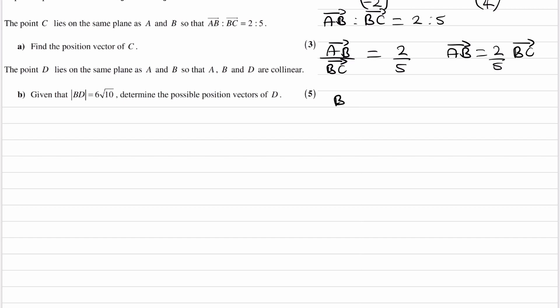And we can also say that BC, rearranging the same equation again for BC if that's what we want to work out, that's 5/2 of AB.